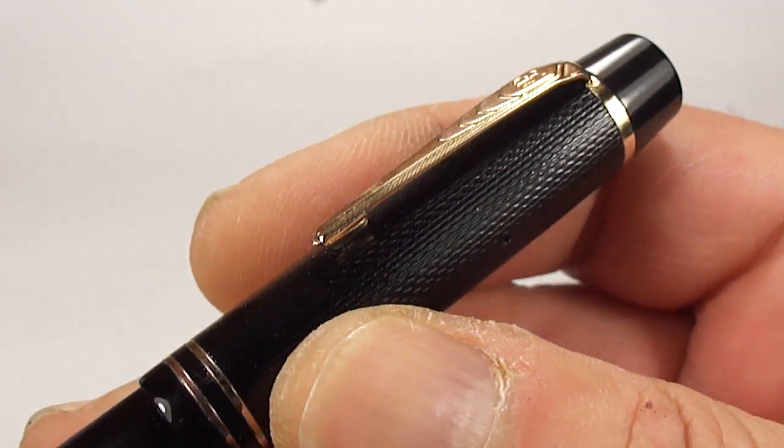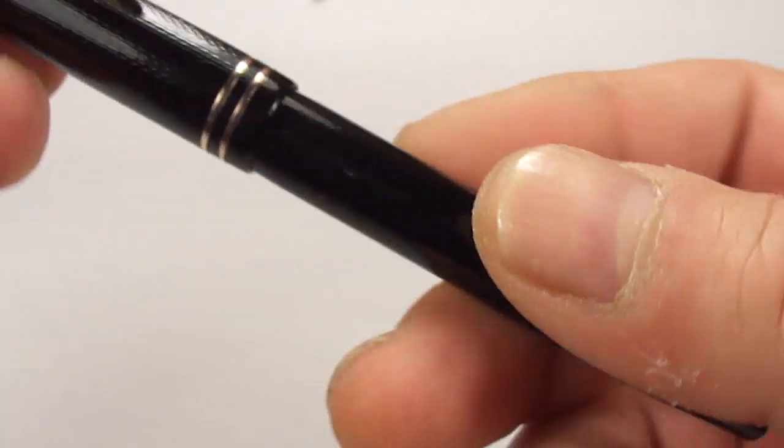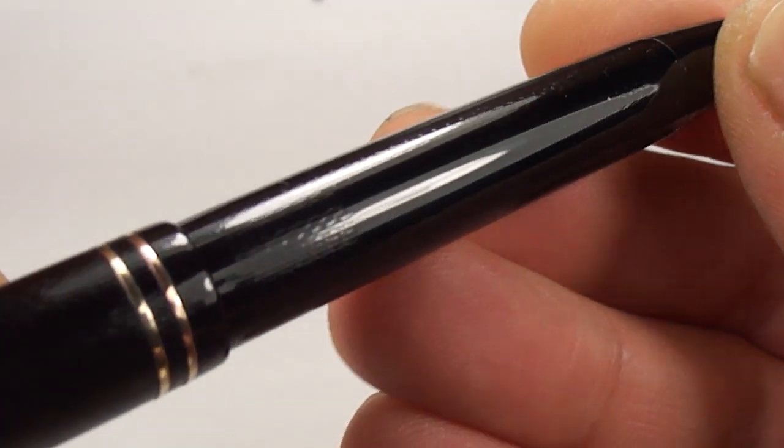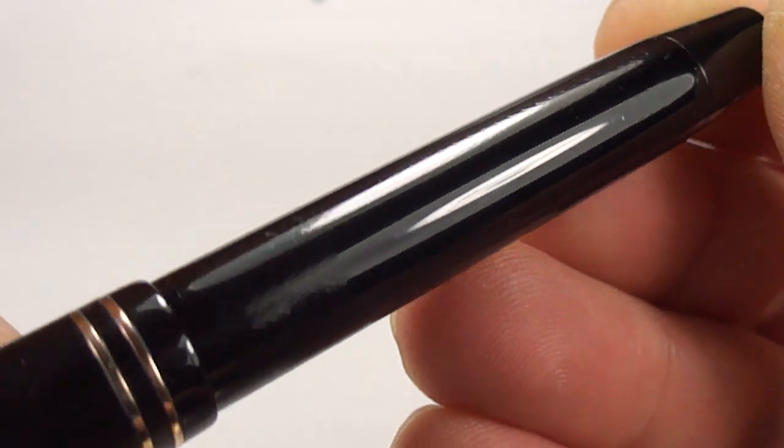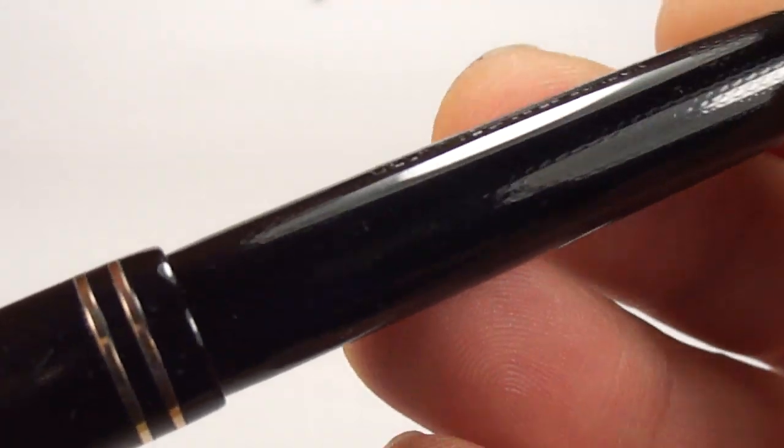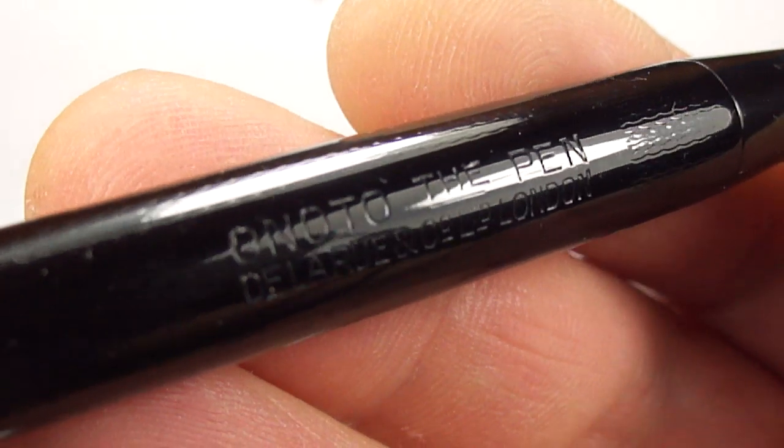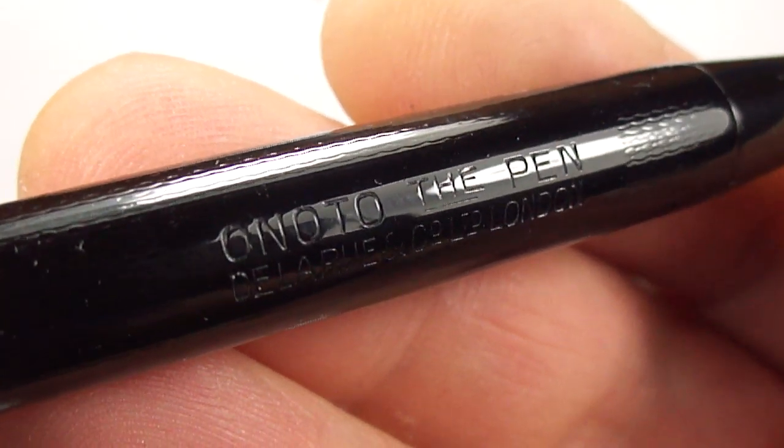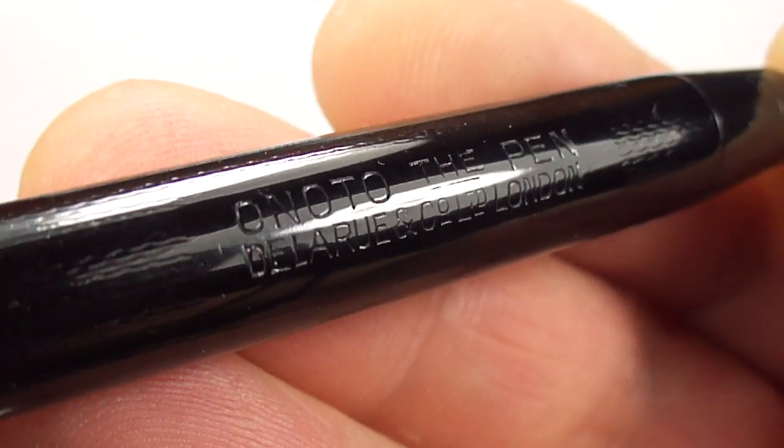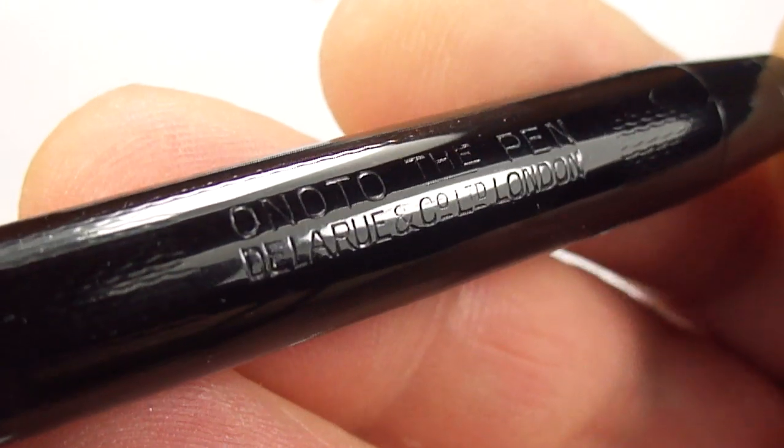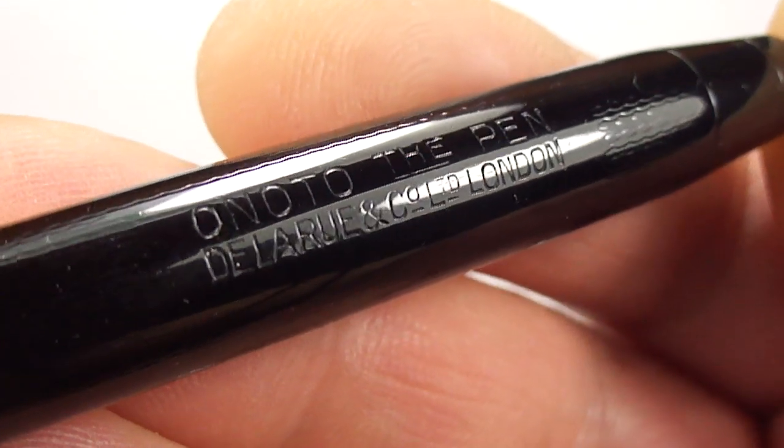Whereas on the barrel, for some reason, not as pronounced as the cap itself. But, if we show you the barrel imprint, there you can see it's got the Onoto pen, and then underneath it's got Delarue London.